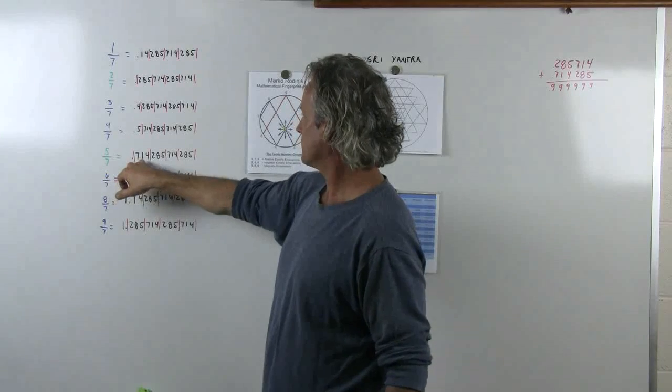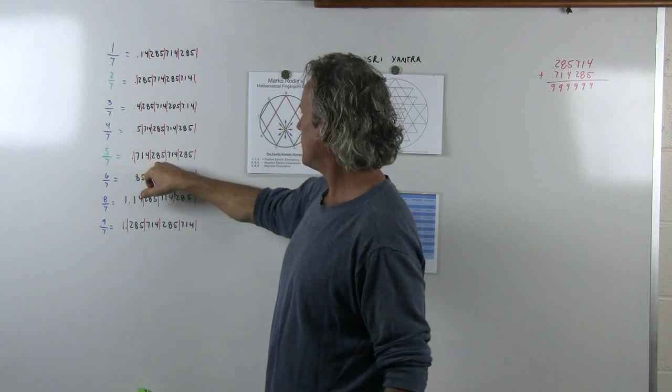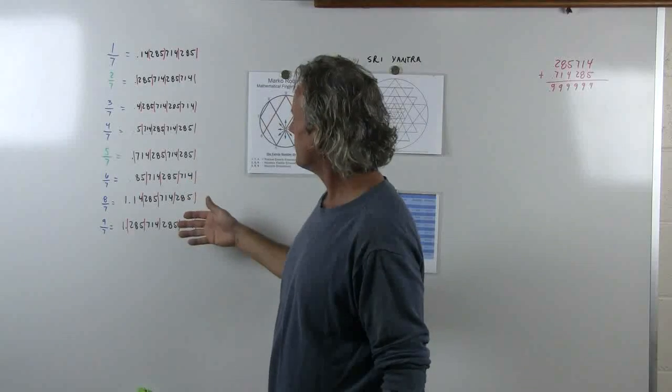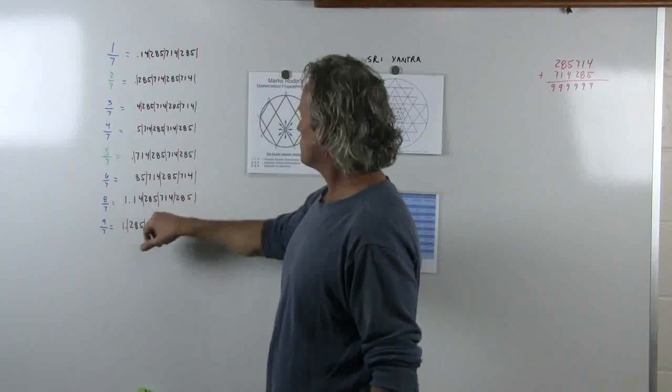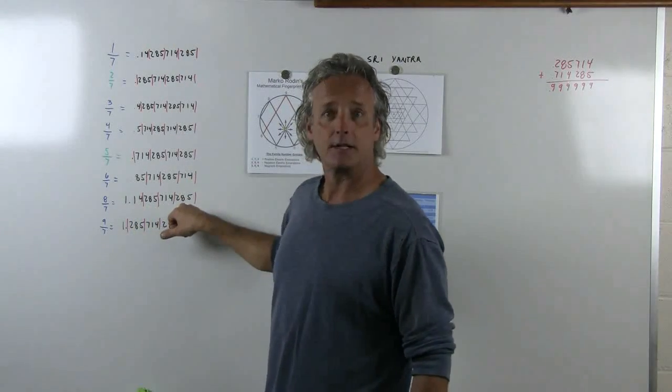And the 5 over 7 starts off with 7, 1, 4, 2, 8, 5, 7, 1, 4, 2, 8, 5, and so forth. But every number over 7 will give you the family number groups in this particular sequence.